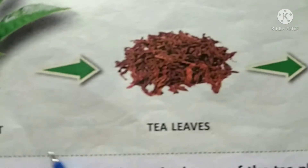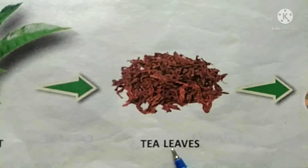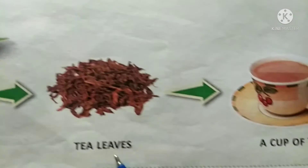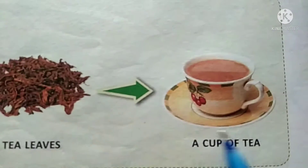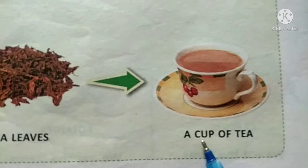Tea plant. Tea plant से हम क्या प्राप्त करते हैं? Tea leaves. और tea leaves से क्या बनते हैं? Tea, चाय.